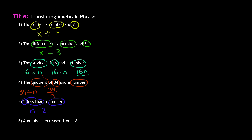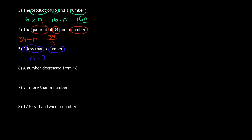Number six: a number decreased from 18. This is also where some people get stuck. Decreased means we have to subtract. Key terms are: number, decreased, and 18. It's telling us a number is being decreased from 18 — so we're subtracting something from 18. So 18 goes first: 18 minus n. That tells us we're decreasing n from 18, so we write 18 minus n.